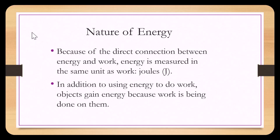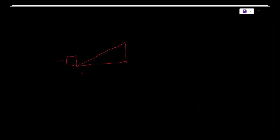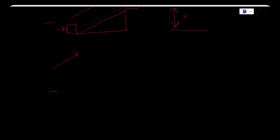In addition to using energy to do work, objects can gain energy because work is being done to them. For example, if we had an object at the bottom of a ramp and a force was applied to the object moving it a distance to reach the top, we could say energy was used on the object. Energy was added to the object when it went from one height to another through what is called gravitational energy.